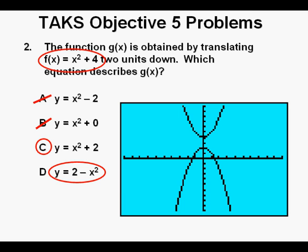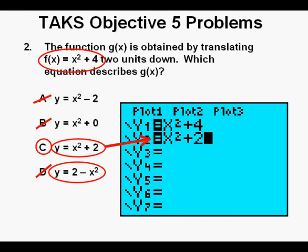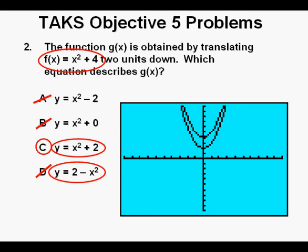This is not a translation but a reflection so we cross off answer d. We go back to y equals and replace answer d with the answer in c. Press graph. We can see that answer c is translated down two units from the original parabola confirming that our correct answer is c.